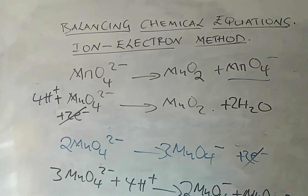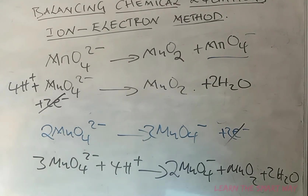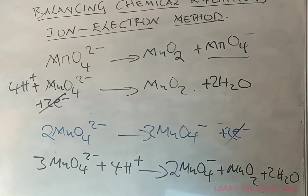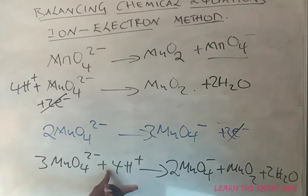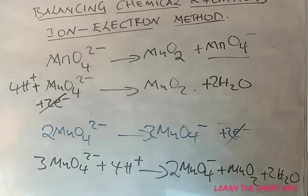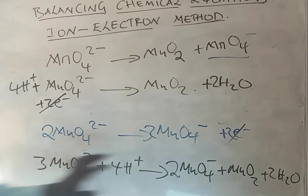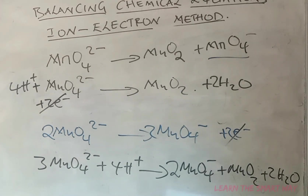To balance in basic or alkaline media, add an equivalent number of hydroxide ions on both sides — four hydroxide ions here, producing four water molecules. Cancel the water molecules as before to get the final equation. Remember: hydrogen ions indicate acidic media; hydroxide ions indicate basic media. For basic media, the steps are the same — just add one extra step of adding hydroxide ions. Thank you for watching.